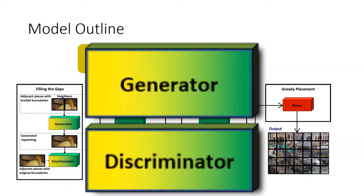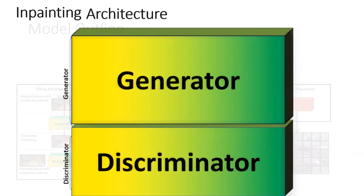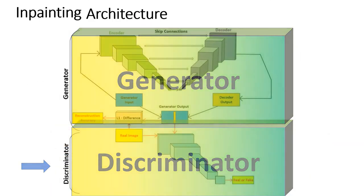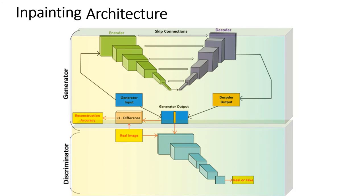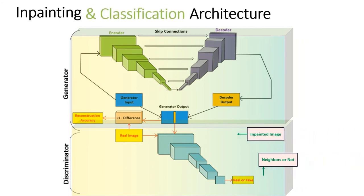An interesting feature of our architecture is that the same GAN discriminator is used both for unpainting and classification. Training of the second task is simply a continuation of the training of the first, beginning from the point it left off.